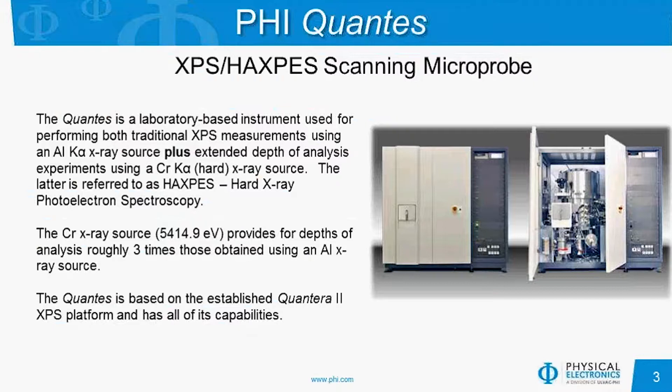PHI and OLVAC PHI have developed a laboratory instrument that combines both traditional XPS measurements with a monochromated aluminum K-alpha X-ray source, plus extended depth of analysis experiments using a monochromated chromium K-alpha source with a photon energy of 5,414.9 eV. This is our new QUANTES, and anyone familiar with PHI's scanning microprobe XPS, especially the QUANTERRA 2, will find that the QUANTES has the same performance as a QUANTERRA 2 plus analysis with a chromium X-ray source.